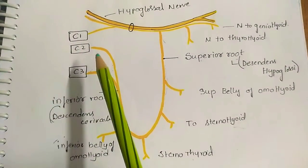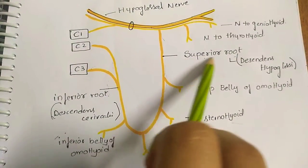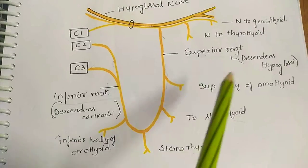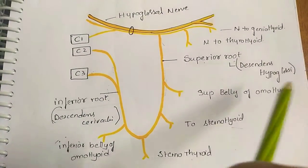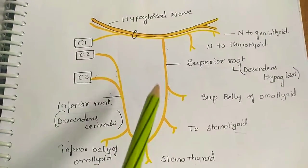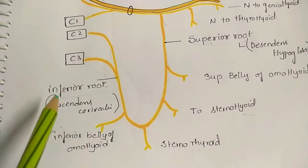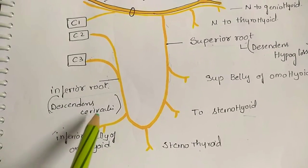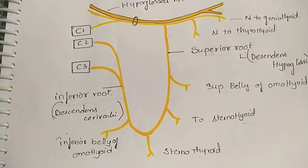The ansa cervicalis has two roots: the superior root and the inferior root. The superior root is also called the descending hypoglossal, as it descends directly from the hypoglossal nerve. The inferior root is called the descending cervicalis, as it descends from the cervical segments.